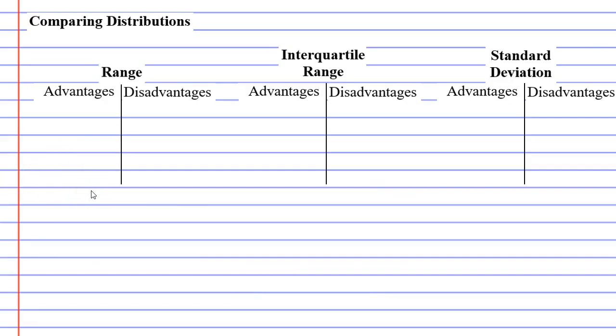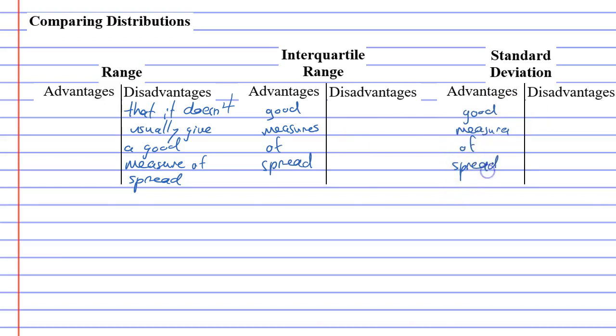So let's talk about the advantages and disadvantages of these three measures of spread. First of all, let's start with the range. The disadvantage is that it doesn't usually give a good measure of spread. And the advantages for interquartile range and standard deviation is that they give a good measure. These give good measures of spread. And the reason they do that is they're not affected by outliers.